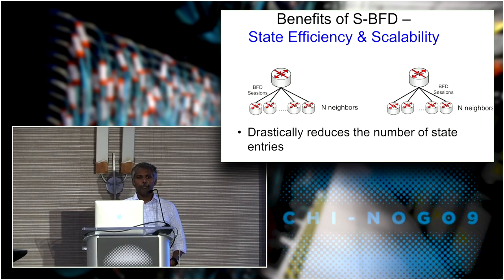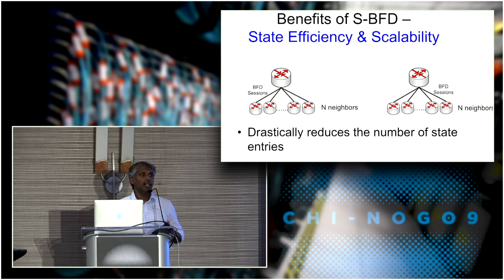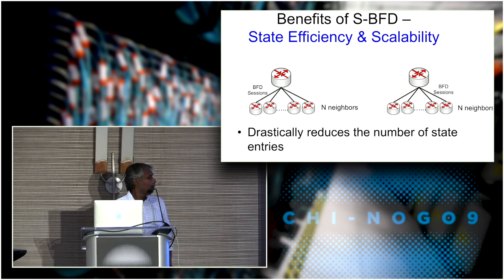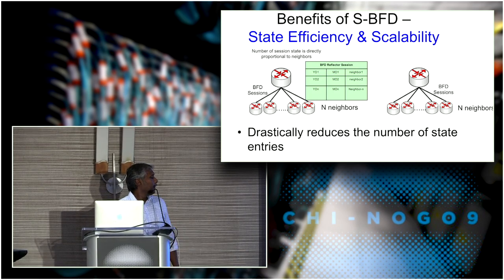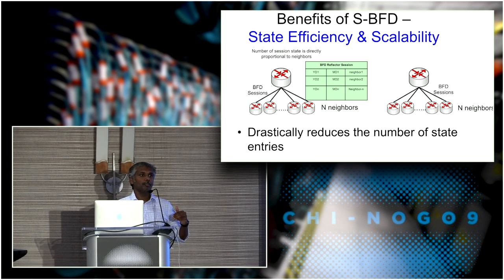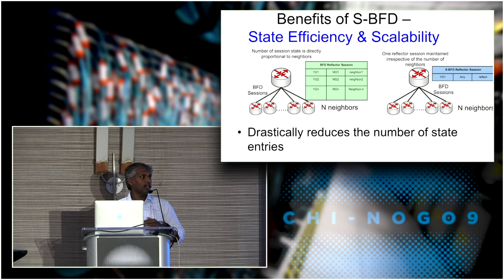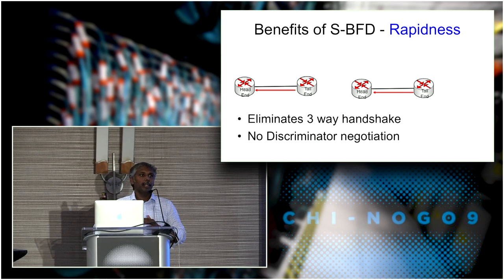From the benefits perspective: state efficiency — because it is state efficient, it handles the scalability issue. With traditional BFD applied to the primary/backup gateway use case, depending on the number of remote nodes monitoring, the primary gateway ends up maintaining many state entries. With seamless BFD, irrespective of the number of nodes monitoring, there is just one state entry — the reflector session — which drastically reduces the need for the target node to maintain state entries.